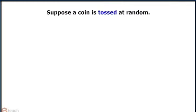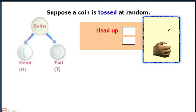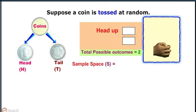Suppose a coin is tossed at random. Now the possible outcomes can be head or a tail. So the total outcome is 2. The sample space denoted as S is equal to {H, T}.